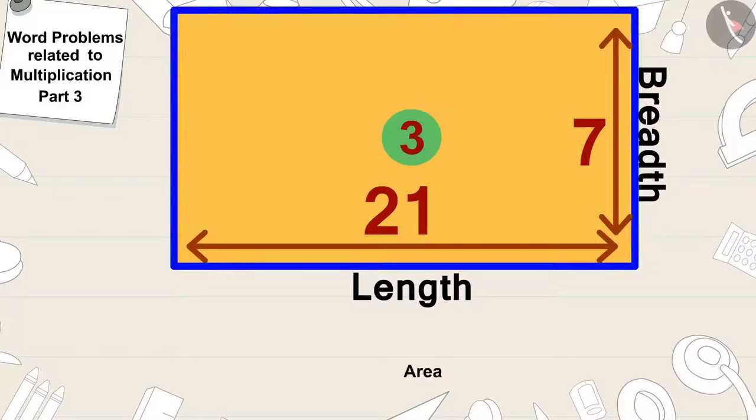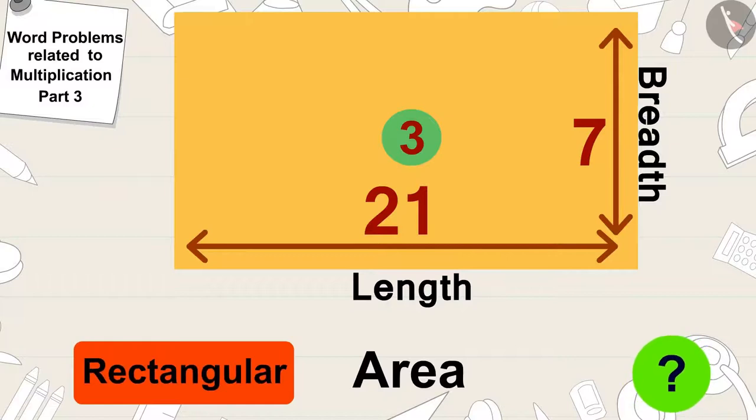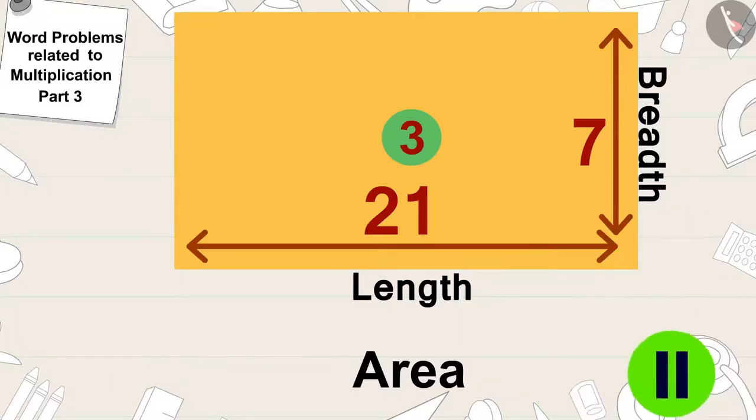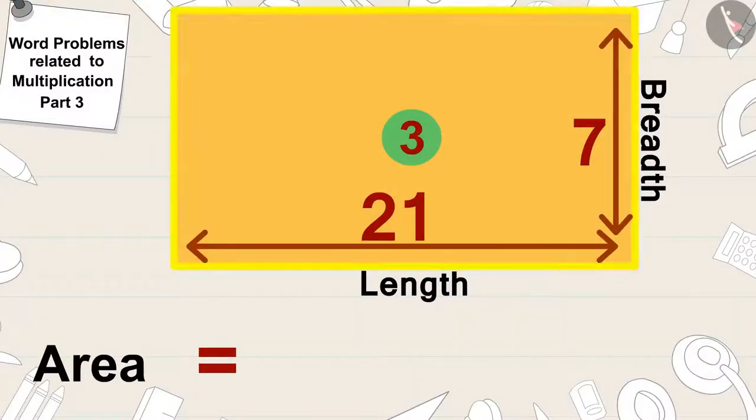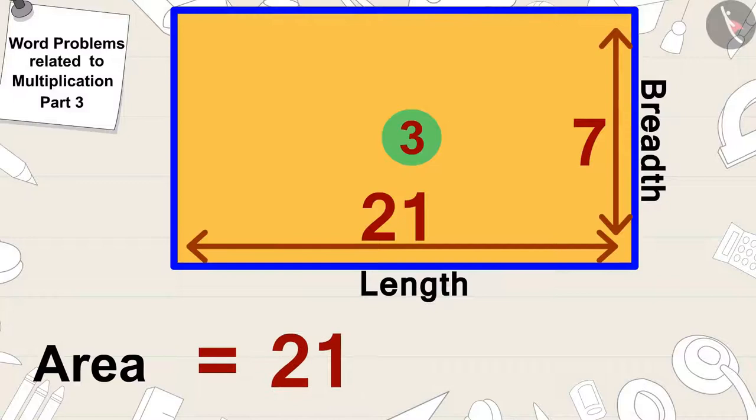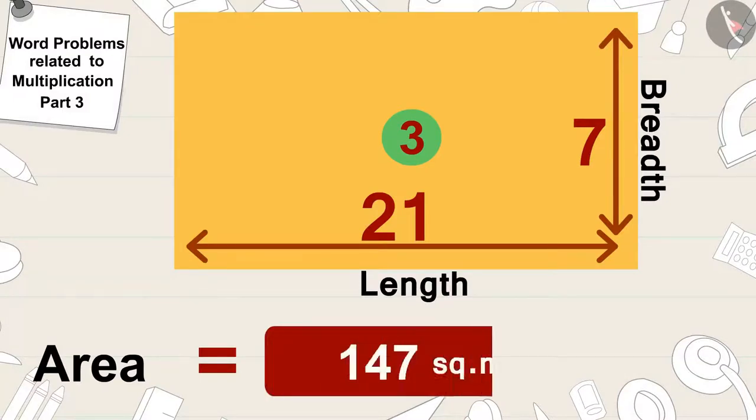Children, can you find the area of this rectangular wall? If you want, you can stop the video and find the answer. The area of this wall is 21 times 7 or 147 square meters. Your answer is absolutely correct.